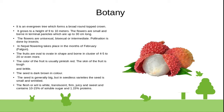Flowers are unisexual, bisexual, or intermediate. Pollination is done by insects. In Nepal, flowering takes place in the month of February.